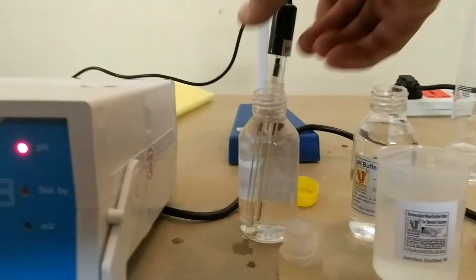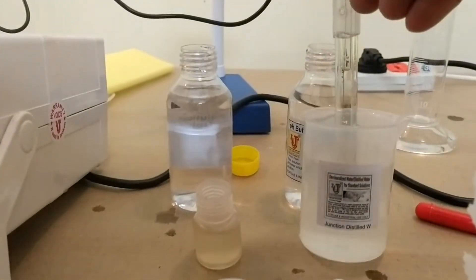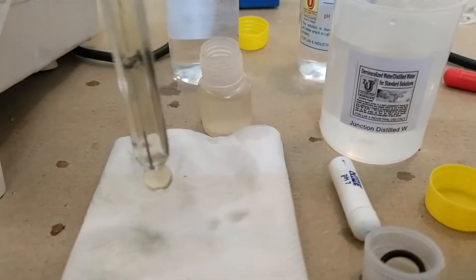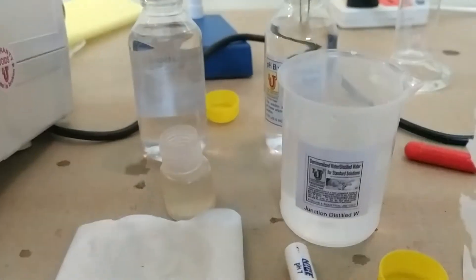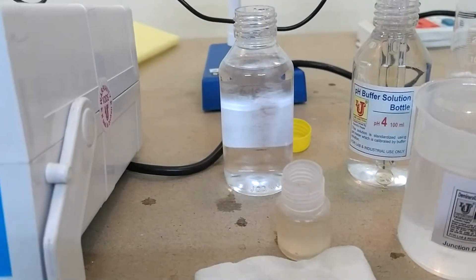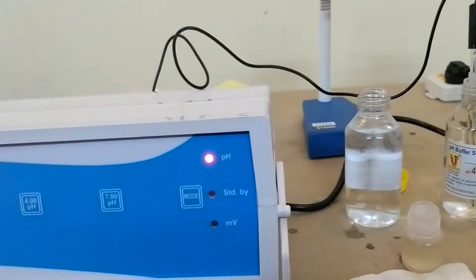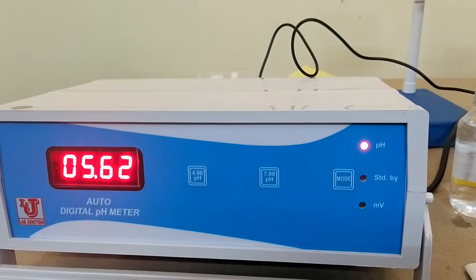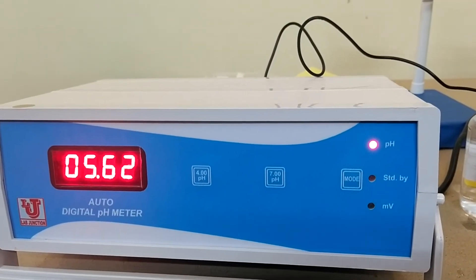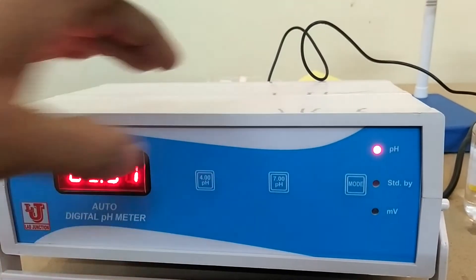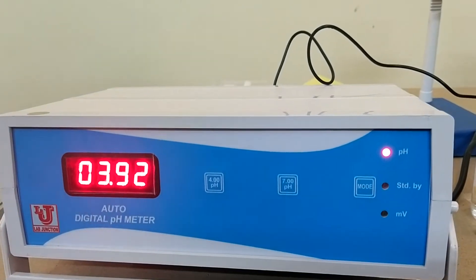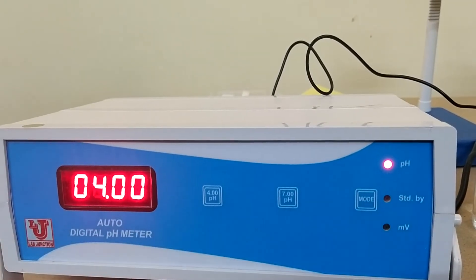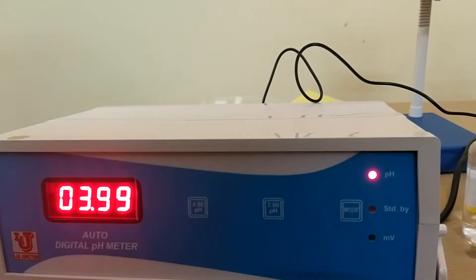Now, refresh electrode with distilled water and put in 4 pH buffer. Press 4. You got it, 4 pH. Now, calibration is done.